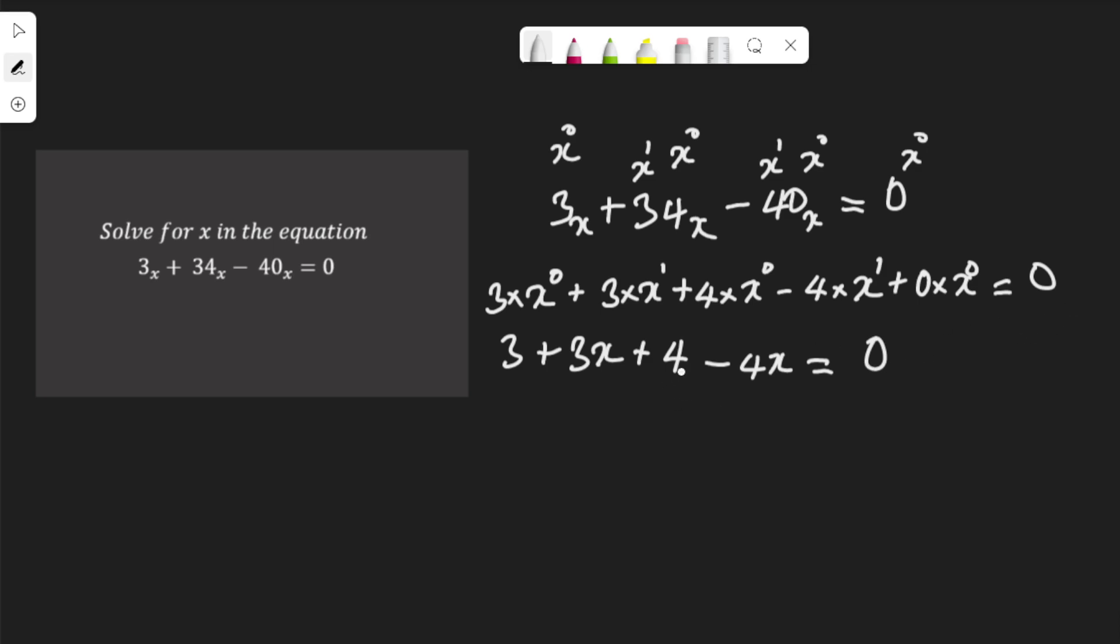Collecting like terms, this 3 and this 4, we'll add them together. 3 plus 4 plus 3x minus 4x equals 0. 3 plus 4 is 7, and 3x minus 4x is minus x.